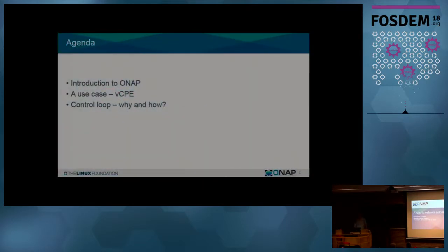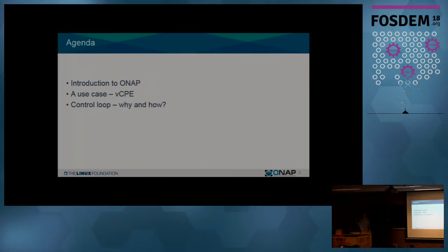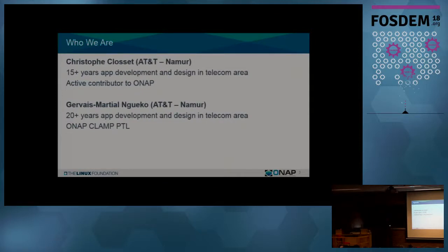So, ONAP. What we will do is try to introduce you to ONAP, because it's quite a young open source project — we don't even have to celebrate our first year. We'll give you a quick overview of what ONAP is and what it's trying to do. Since this is all very theoretical, we'll go through a use case implemented in our first release called VCP. Then we'll touch on what a control loop is and why we'd want that in an SDN network. We have recorded the demo to avoid the demo effect — we have videos, so we are sure it's going to work.